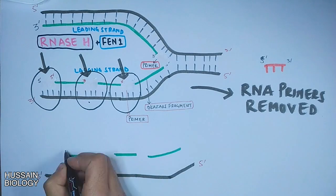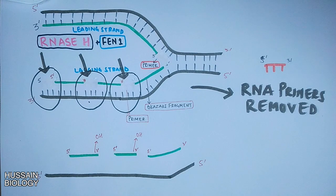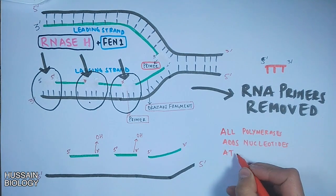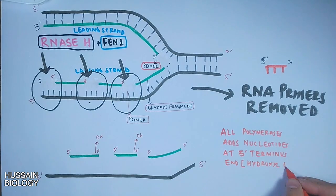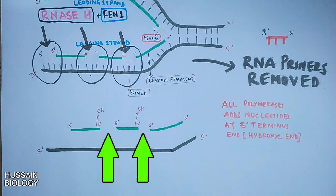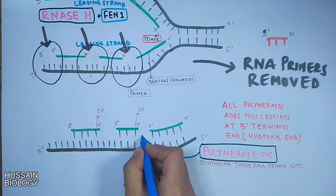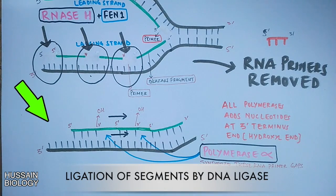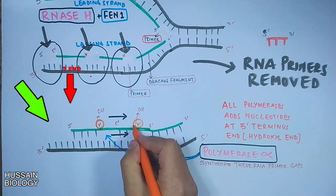After primer removal, we get the DNA molecule with the lagging strand having gaps between segments — these are primer gaps which need to be filled by deoxyribonucleotides. This gap-filling work is done by DNA polymerase. All polymerase enzymes add nucleotides on the 3' terminus end, or the hydroxyl end. So here we have two gaps where polymerase can work on these 3' hydroxyl ends and synthesize the strand. This work is done by DNA polymerase alpha.